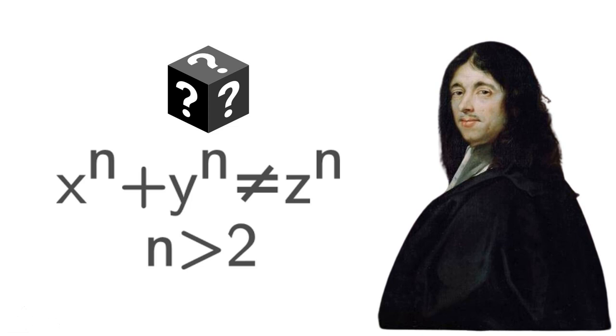As time passed, it gained mythical status, with many believing that Fermat didn't have a proof and perhaps made an error in his claim. It wasn't until 1994 that Sir Andrew Wiles, a British mathematician, presented a proof for Fermat's last theorem.